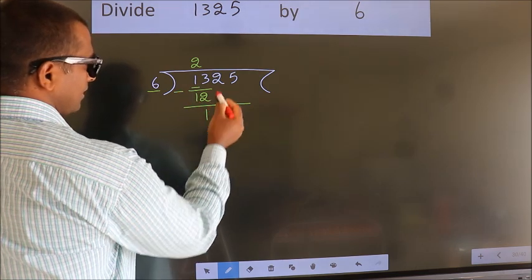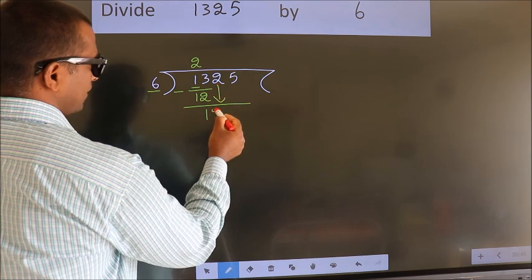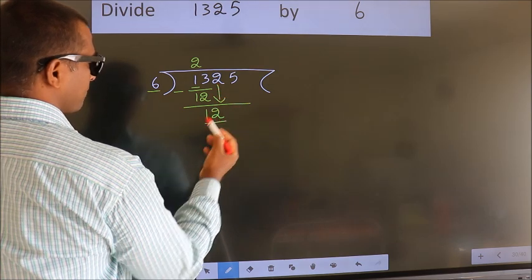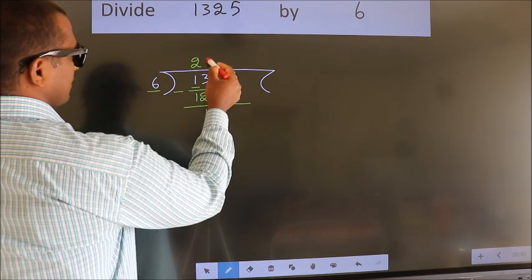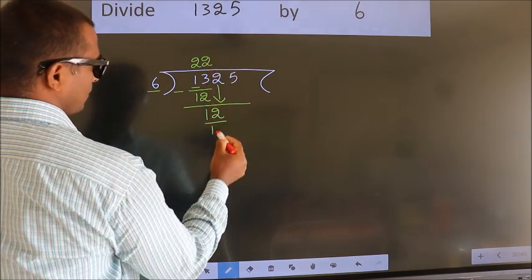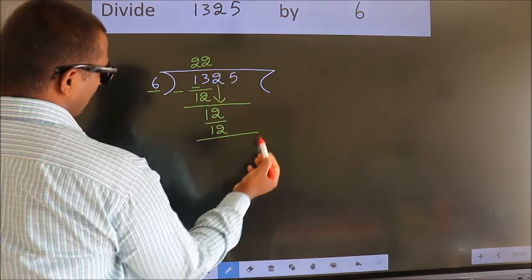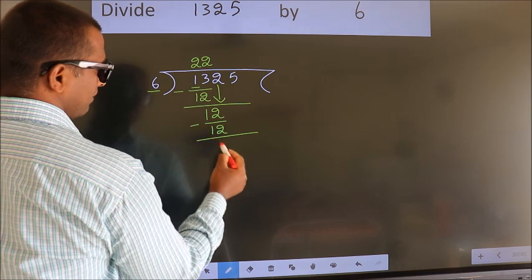After this, bring down the beside number. So 2 down. So 12. When do we get 12? In 6 table. 6 times 2 is 12. Now we subtract. We get 0.